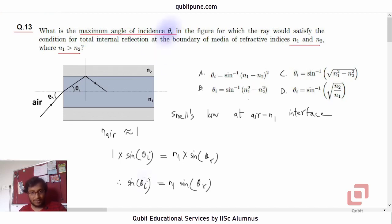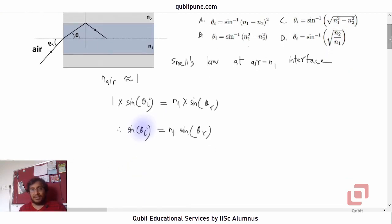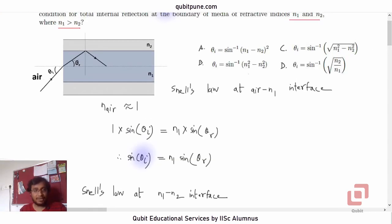And that theta_i is here so we would now proceed with the angle theta_r. Let us now apply Snell's law at the n1-n2 interface. Now observe that when the ray of light is incident at this interface, what is the angle of incidence?